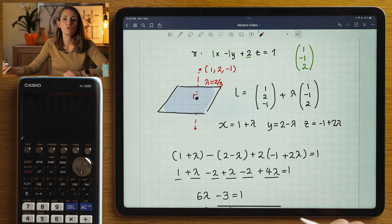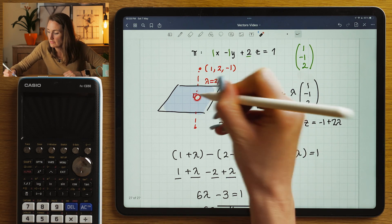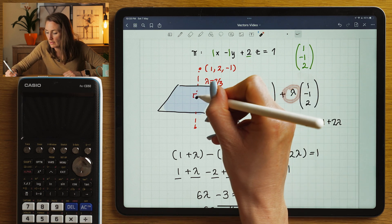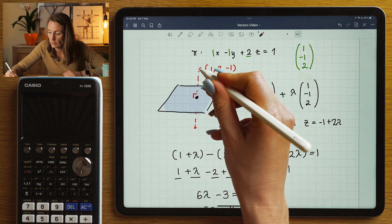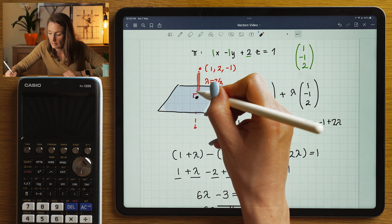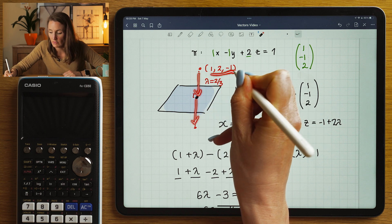There's kind of two methods here. If you want to find the exact point, you can by substituting lambda back in here. That will give you the exact point. If you want, you can then find this vector, double it, and add it to this point here.